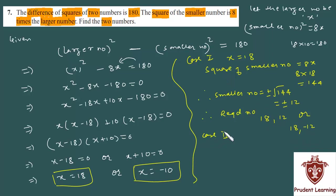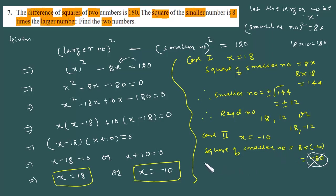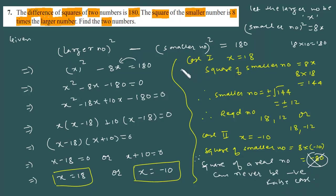In case 2, x equals minus 10. Then the square of the smaller number would be 8 times minus 10, which is minus 80. But this is a contradiction — the square of any real number can never be negative. Since the square of a real number can never be negative, this case is false.